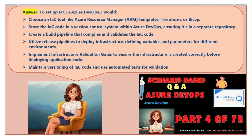Store the IaC code in a version control system within Azure DevOps, ensuring it's in a separate repository. Create a build pipeline that compiles and validates the IaC code. Utilize release pipelines to deploy infrastructure, defining variables and parameters for different environments. Implement infrastructure validation gates to ensure the infrastructure is created correctly before deploying application code. Maintain versioning of IaC code and use automated tests for validation.